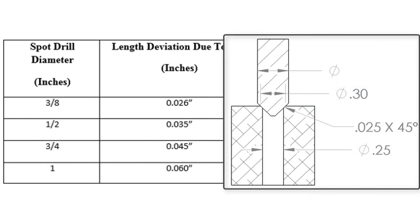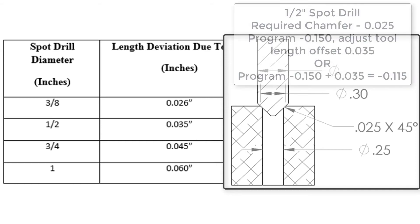For example, if a half-inch spot drill was used in the figure to leave the 25 thou chamfer, the depth would be 150 thou if the tool came to a true point.